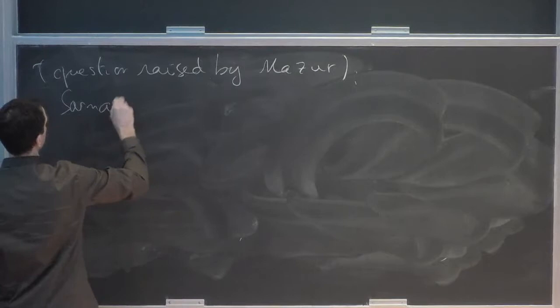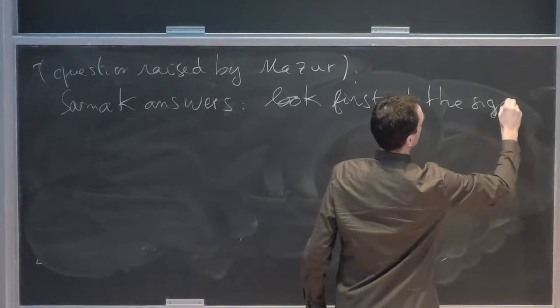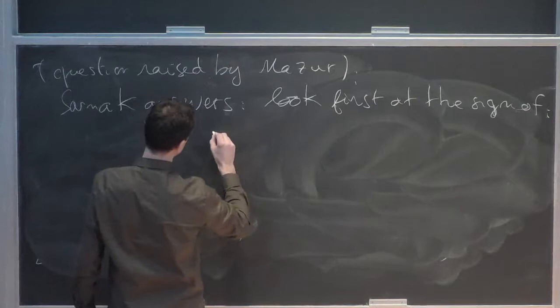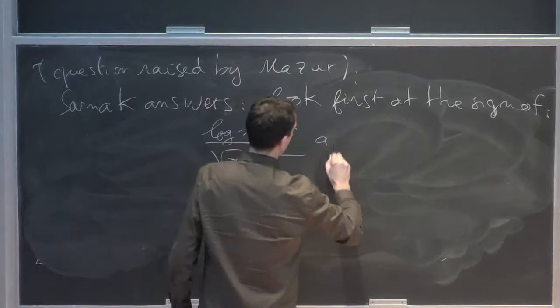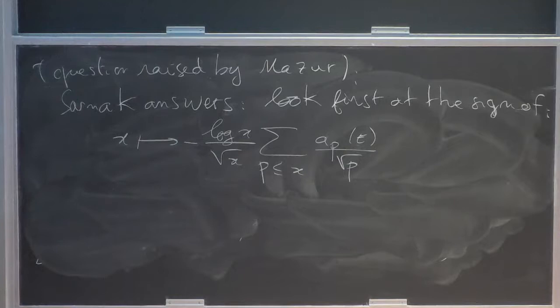And Sarnak answered, look first at the sign of something easier. So log x over root x sum m_p of e over root p. It doesn't look easier, but it is. And maybe there's a minus sign here.